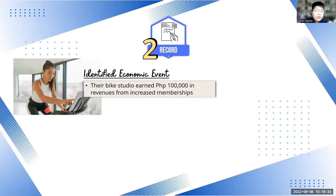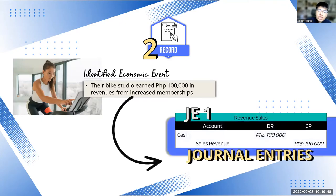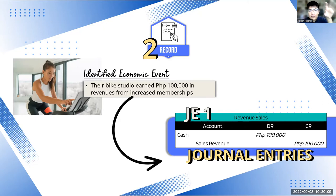Step two: now that we've identified the economic events, the next step is to turn them into what we call journal entries. Journal entries are basically a set of entries to ensure you apply financial standards based on a given economic event. Right now, you don't need to worry about debit or credit or how to write journal entries. What's important is that you understand that from an economic event, we record them into journal entries — that's the second step of recording.